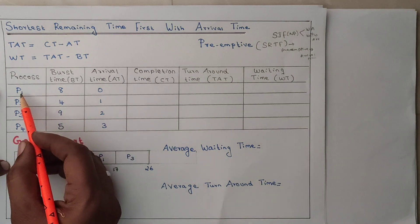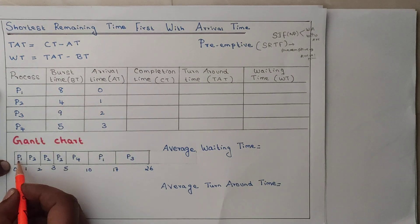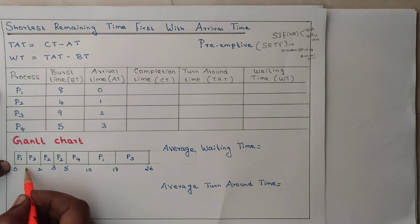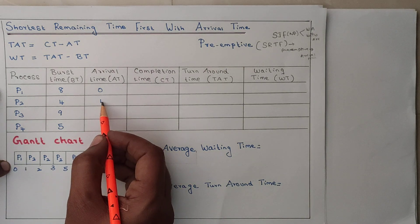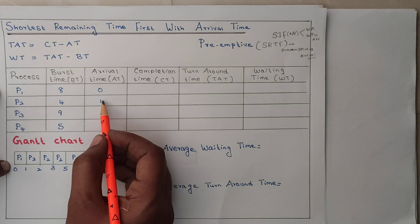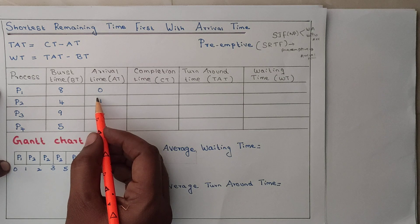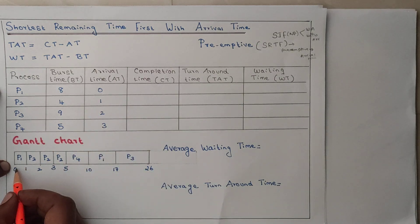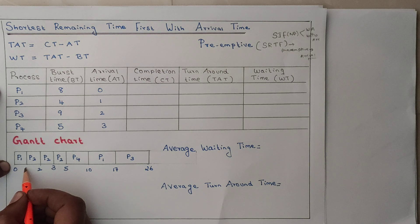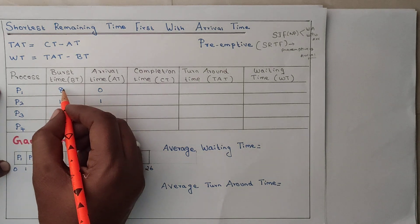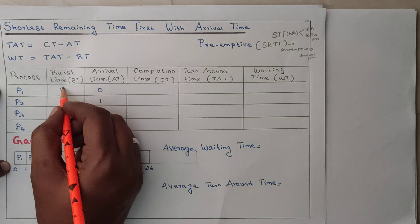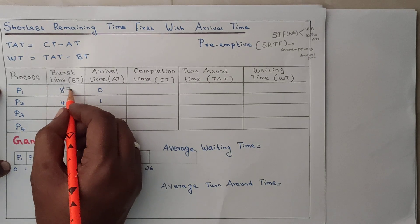At 0th millisecond, process P1 arrives, so P1 is placed here from 0 to 1. Why 0 to 1? Because at 1st millisecond another process is also arriving, so we check the burst time of each process. P1 works from 0 to 1 — 1 millisecond of work is done. The burst time is 8, so it becomes 7.